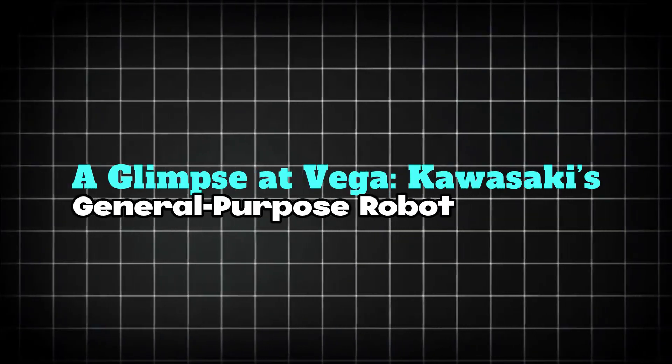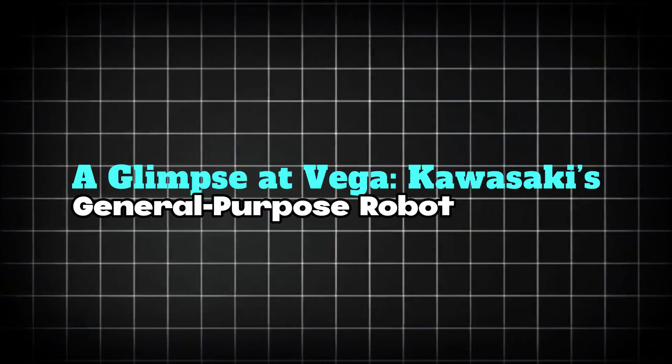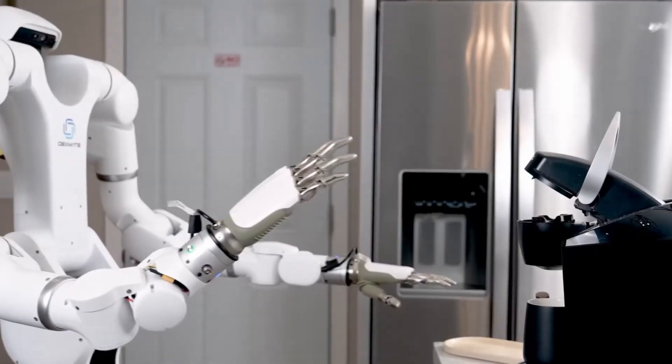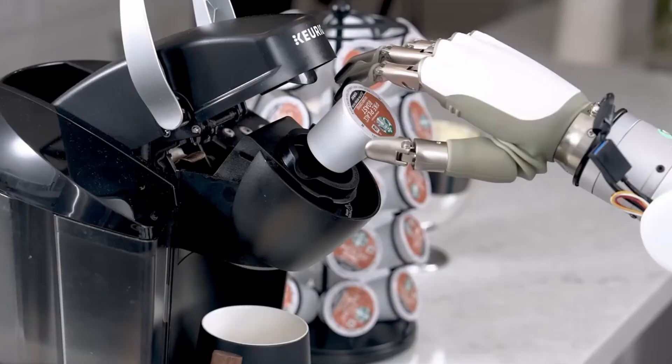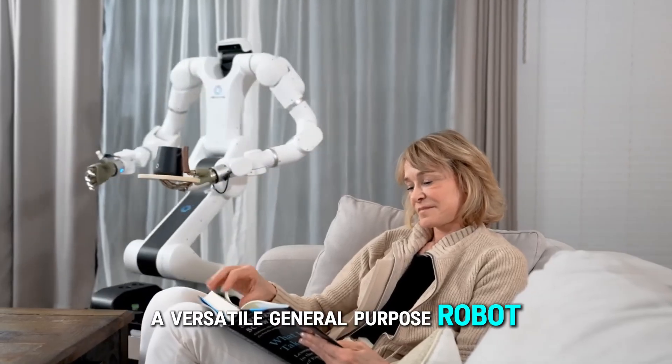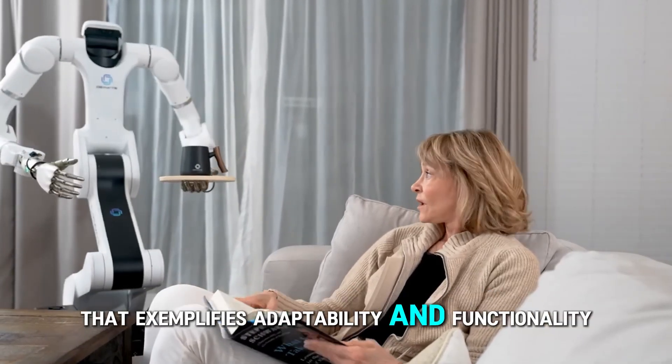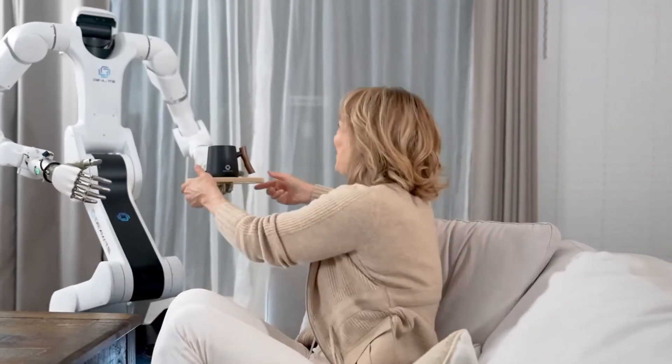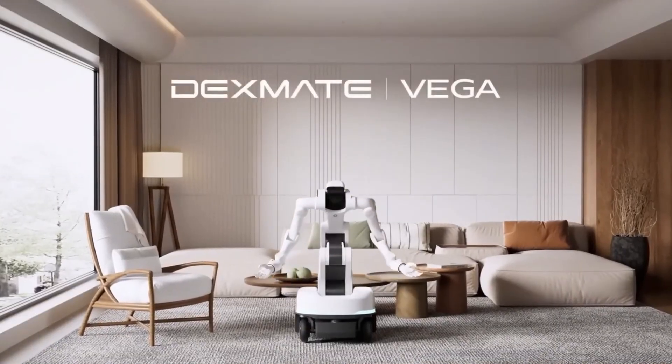A glimpse at Vega, Kawasaki's general-purpose robot. Alongside the remarkable Kaleido-8.0, Kawasaki has also introduced Vega, a versatile general-purpose robot that exemplifies adaptability and functionality. Equipped with high payload arms and a foldable torso, Vega is engineered to tackle a wide range of tasks that demand flexibility and precision.